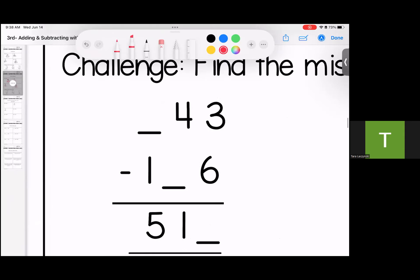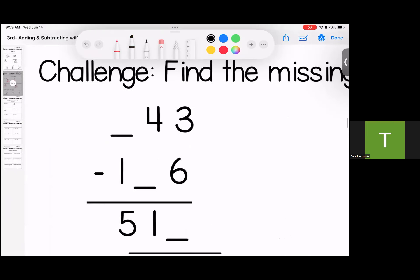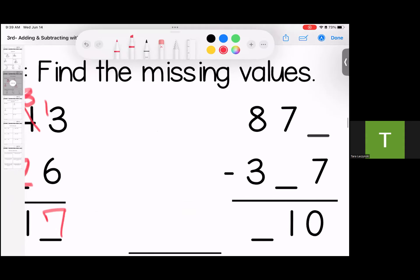Challenge with subtraction. Here we go. I know that I can't subtract from 6, I'm going to have to borrow. 13 minus 6 gives me 7. Now, 3 minus what gives me 1? I need a 2. And what minus 1 gives me 5? I need a 6. 643 minus 126 gives me 517.